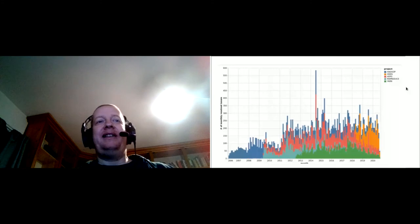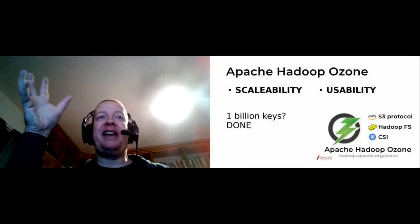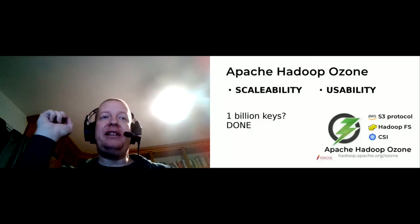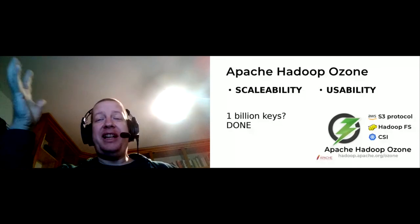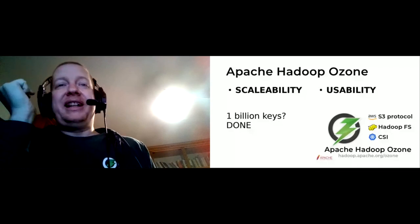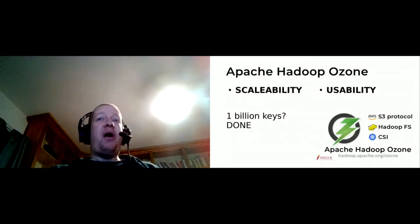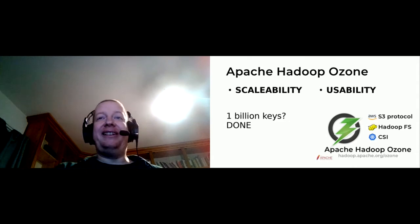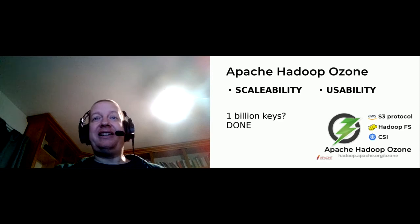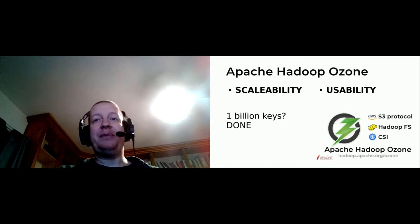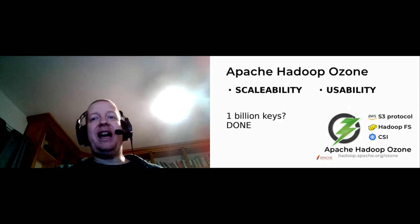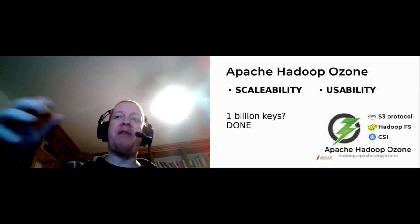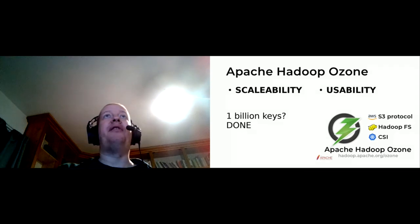So what can Ozone provide? The two biggest problems are scalability — HDFS is not very good at handling lots of small files, because that was not a goal when it was designed — and usability. Ozone is designed to support billions of keys; we've tested with one billion keys. Ozone can be used not only from Flink, HBase, or the Hadoop ecosystem, but it also provides an AWS S3-compatible interface, so you can use it from any tool that works with AWS S3. It also has a Container Storage Interface.